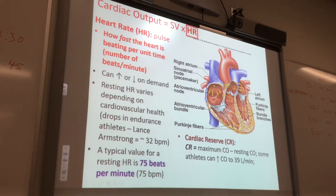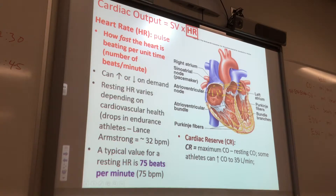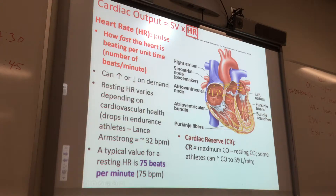We talked about typical values. Then you have this thing called cardiac reserve — the formula is maximum cardiac output minus resting cardiac output. So you get on a running machine or cycling machine to find your maximum cardiac output.